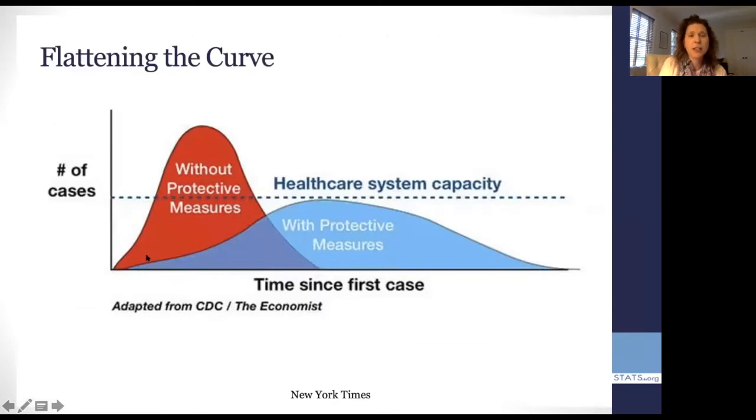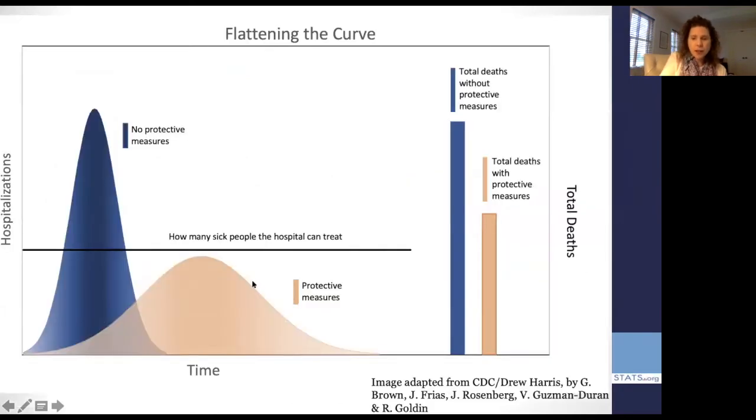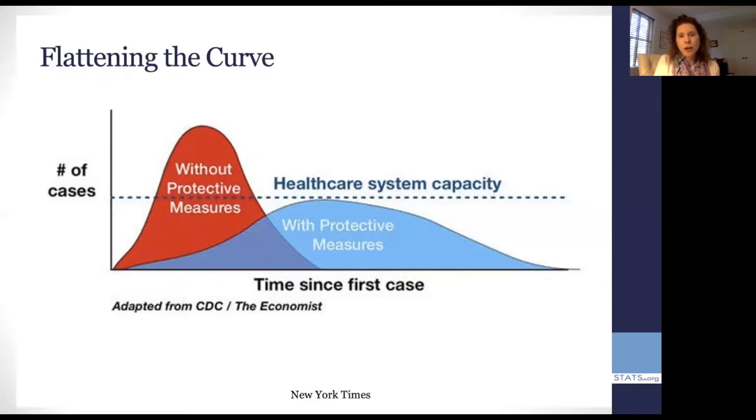Now there's lots of representations of information, and I wanted to bring up another one that was popularly and widely viewed as being highly effective. In here, we have two curves that are representing people's cases. The number of cases is here on the left axis, the y axis, saying that without protective measures, we would go over a healthcare system capacity. And with protective measures, we would stay under that all important line of the healthcare system capacity. And on the one hand, this was enormously effective because people really understood the idea of flattening the curve, that if we could have fewer cases even over more time, that we would not overwhelm the healthcare system.